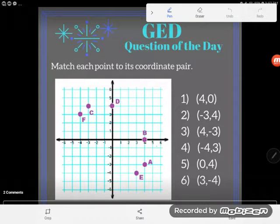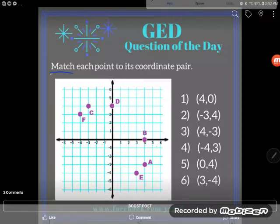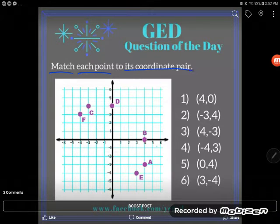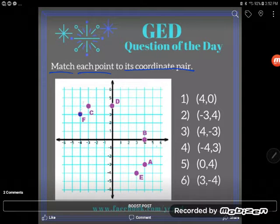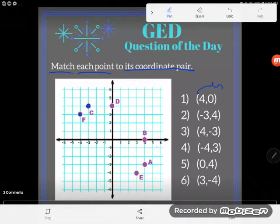Hey GED students, it's GED question of the day time and today I've been asked to match each point to its coordinate pair. Match each point, so these little dots on the graph are points, to its coordinate pair. On the right here we have coordinate pairs and that's how we write about the address of a point or where it's located in space. That's how we mathematically talk about a point's location.